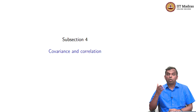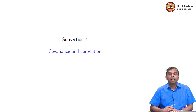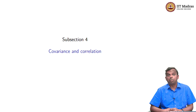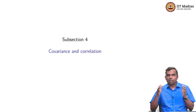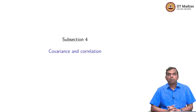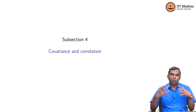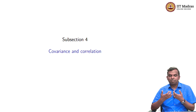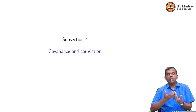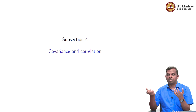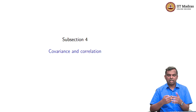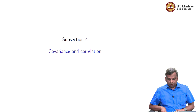We have seen variance before — expected value of a random variable, and variance as a measure of the spread of how spread out the values are likely to be. Expected value was the center of one random variable. Now, what if you have two random variables? You might want measures which relate the two, beyond individual variance and expected value. Those are things like covariance and correlation.